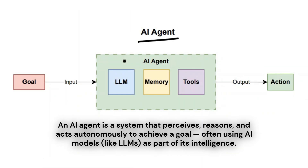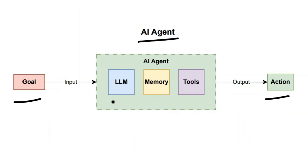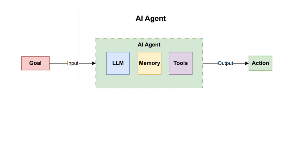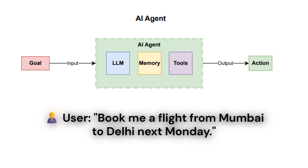Now let's see what an AI agent is. An AI agent is a system that takes a goal as input, processes it, and works autonomously to achieve that goal. It has three components: LLM, memory, and tools. The LLM takes the goal as input, plans the next action, and uses tools to perform the goal. Memory stores the conversation.